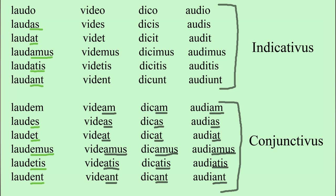So all verbs whose stem is in 'a,' such as laudare, amare, orare, rogare, and any others in -are, take in the modus coniunctivus the endings: em, es, et, emus, etis, ent. For example, oramus means 'we pray,' while oremus means 'let us pray' or 'may we pray' — oremus.